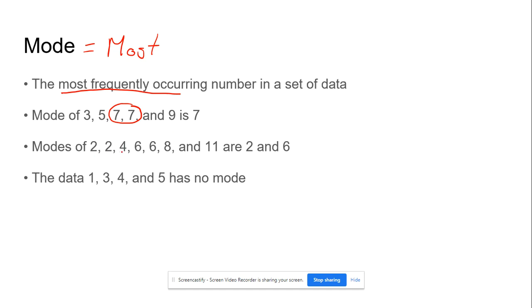The mode of 2, 4, 6, 8, 11. These numbers here. There's two 2s, there's two 6s. So the mode of that set of numbers is 2 and 6. You can have more than one mode, but you can only have one median. You can have two or more than two modes, more than one mode.